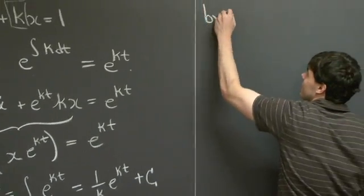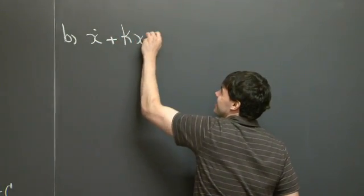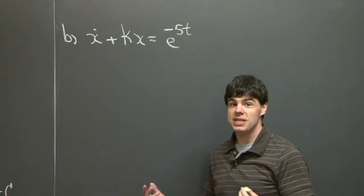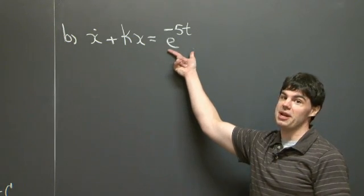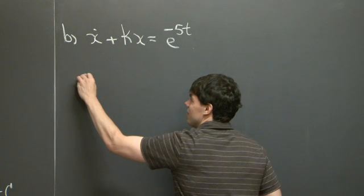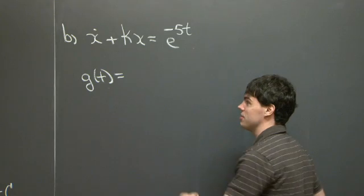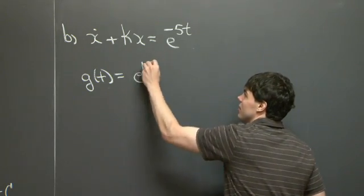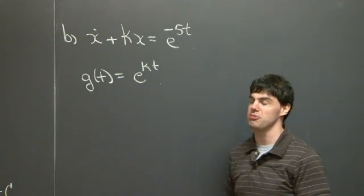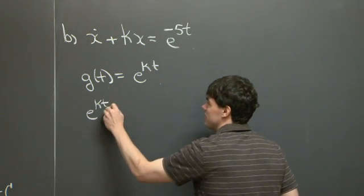For Part B, we have the equation x-dot plus kx equals e to the minus 5t. The only thing we've changed is the right-hand side — we haven't changed the left-hand side. So if we compute the integrating factor, we note that it's the same integrating factor as in Part A. The reason is that the integrating factor only depends on the left-hand side — it only depends on the linear terms. So we can multiply the equation through by the integrating factor again.